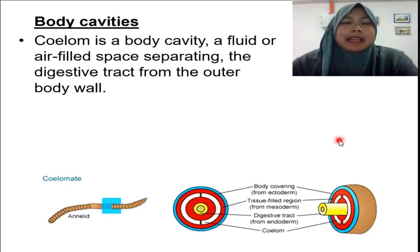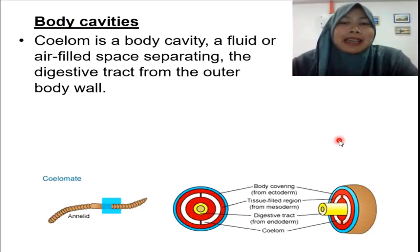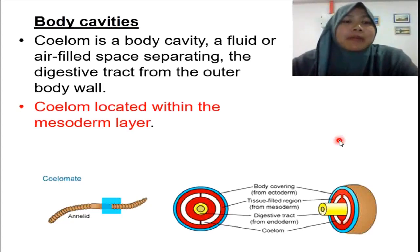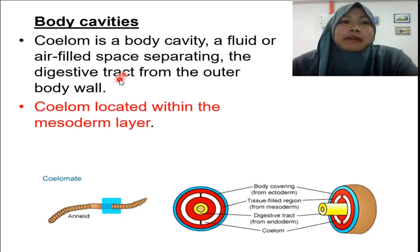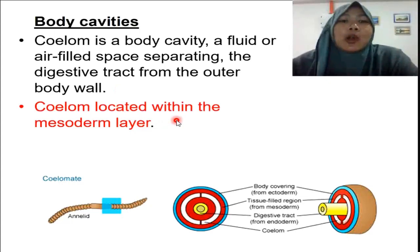Since some animals have tissues — either two or three layers — they are sub-classified further into body cavity types. The body cavity is called a coelom. The coelom is a body cavity filled with either fluid or air that separates the digestive tract from the outer body wall. Importantly, the coelom is located within the mesoderm layer.